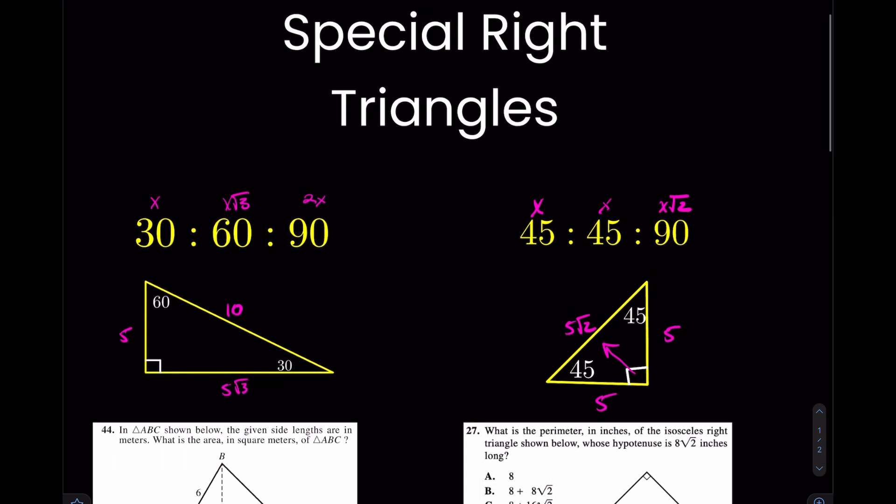I'll zoom out so you can soak in both of them really. 30, 60, 90 again was X, X root 3, 2X. And then 45, 45, 90 was X, X, X root 2. So let's try applying these to some questions.